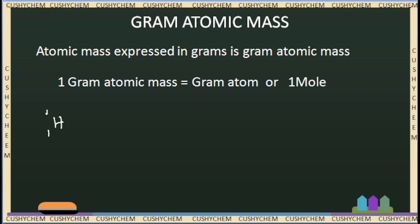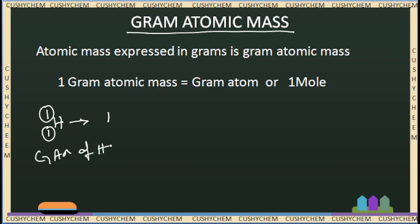For example, let's say hydrogen is 1. It has an atomic number and a mass number. So hydrogen's mass number is 1. Gram atomic mass of hydrogen is equal to 1 gram. Atomic mass represented in grams.